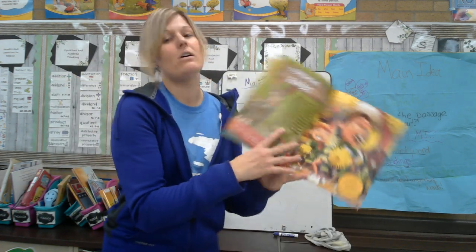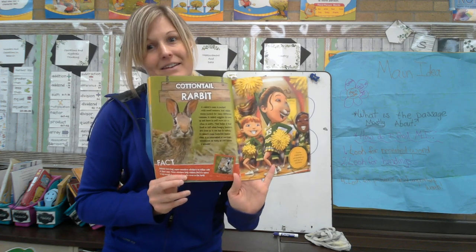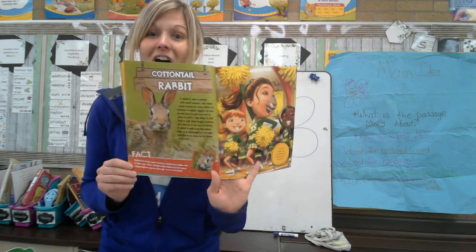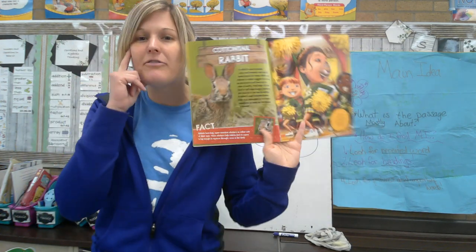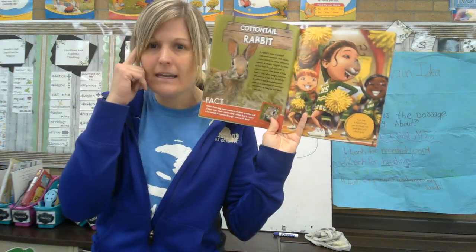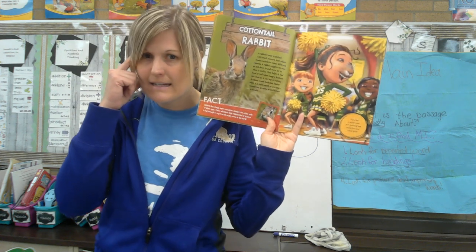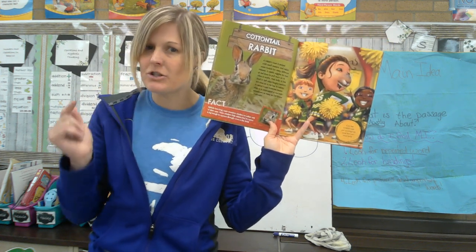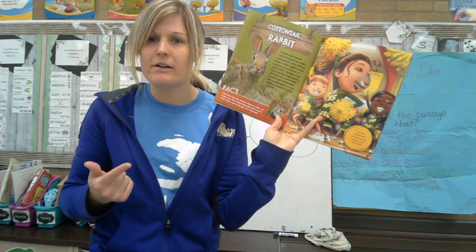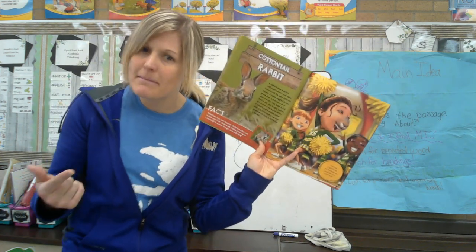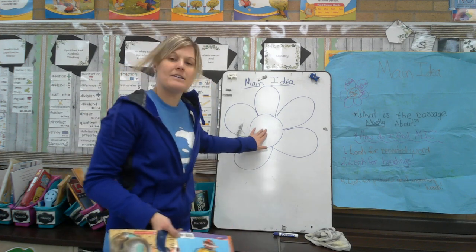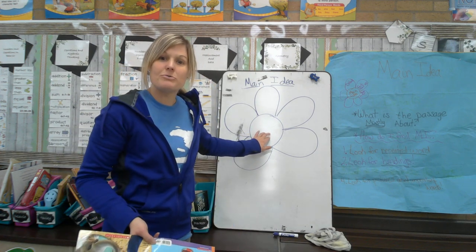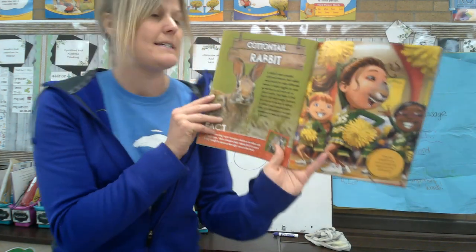We talked about the tapir, so let's go ahead and pick another one. How about the cottontail rabbit — everybody loves those, especially with Easter coming. I'm going to use my clues and before I even read I'm going to be thinking: what does the heading say? What does the first sentence say? What pictures am I seeing? What words am I hearing repeated? And when I figure out what my main idea is, I'm going to put that right here in my graphic organizer. The main idea goes right here in the middle of the flower.